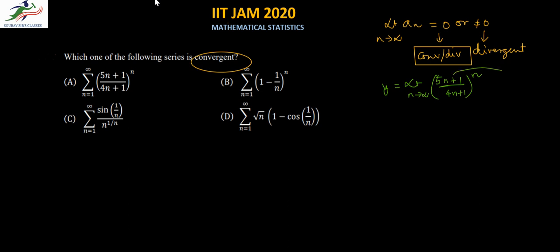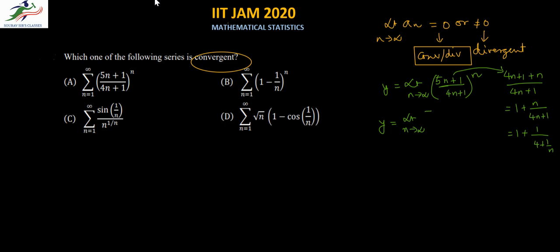Now 5n + 1 can be written as (4n + 1) + n. With 4n + 1 in the denominator, this becomes 1 + n/(4n + 1), which simplifies to 1 + 1/(4 + 1/n). So y equals the limit as n tends to infinity of (1 + 1/(4 + 1/n)) to the power n.